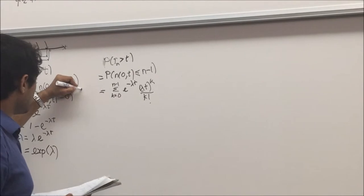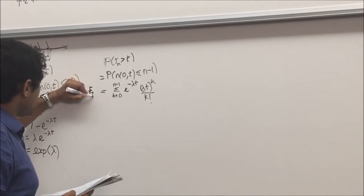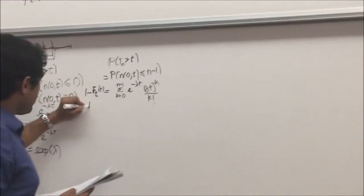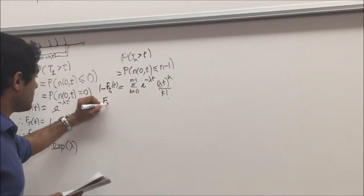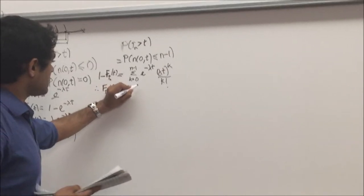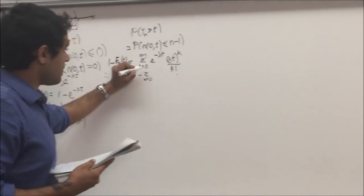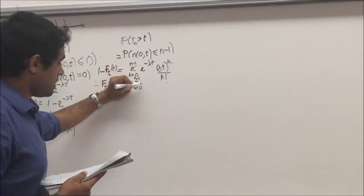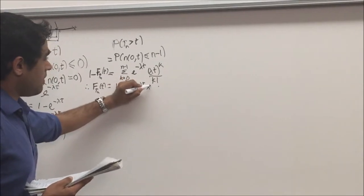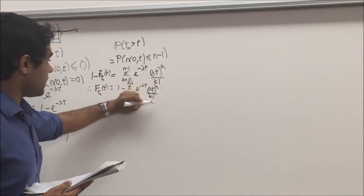This is equal to 1 minus F of tau_n of T. So the distribution function F of tau_n of T will be equal to 1 minus the summation of K equals 0 to N minus 1 of E raised to minus lambda T times lambda T raised to K by K factorial.